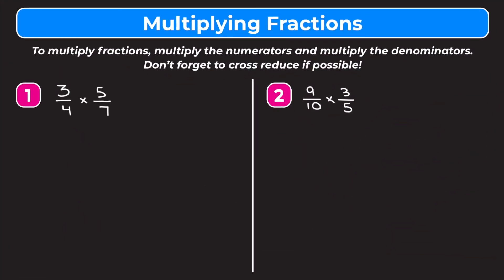In this video we're learning how to multiply fractions. The rule at the top of our screen says to multiply fractions, multiply the numerators and multiply the denominators, and don't forget to cross reduce if possible. We're going to ignore cross reduction for now and come back to it in examples three and four. The nice thing about multiplication is that we do not need common denominators — that's only required when adding or subtracting fractions.